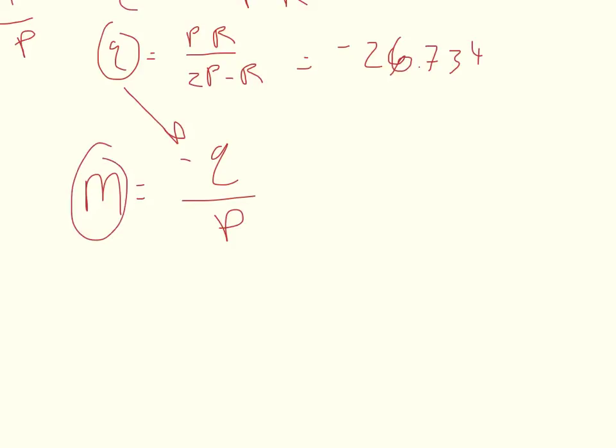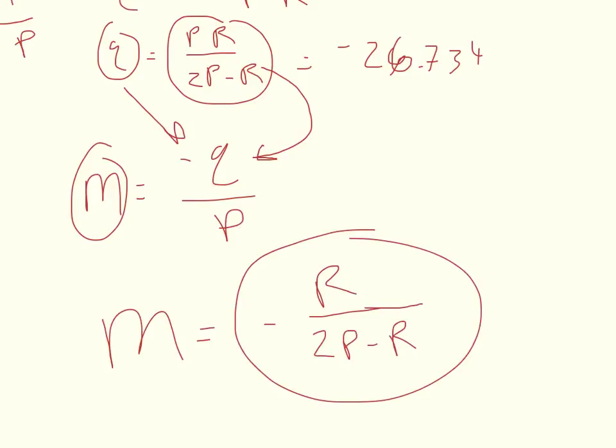Now, you can also substitute this term in right here. If you do that and solve for magnification, you get magnification equals negative R over 2P minus R. If you're good at algebra, I challenge you to simplify down to this expression using this substitution.